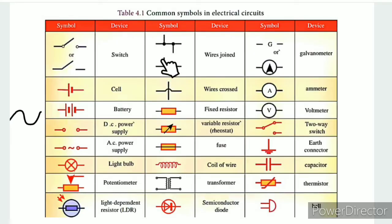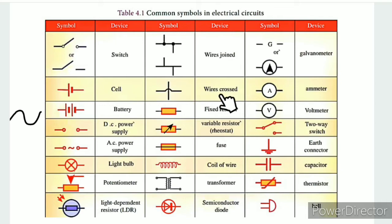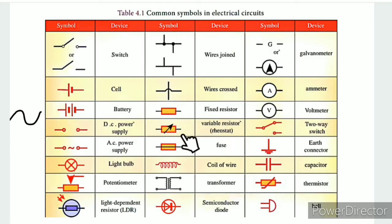The connected wire with a dot represents a junction. The crossing wire without a dot means no connection. The joint is represented separately. The fixed resistor and the variable resistor each have their own symbols, and the fuse has its own symbol as well.